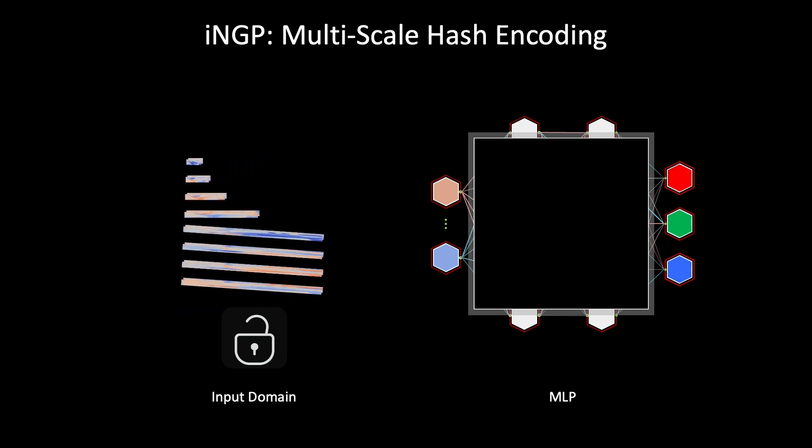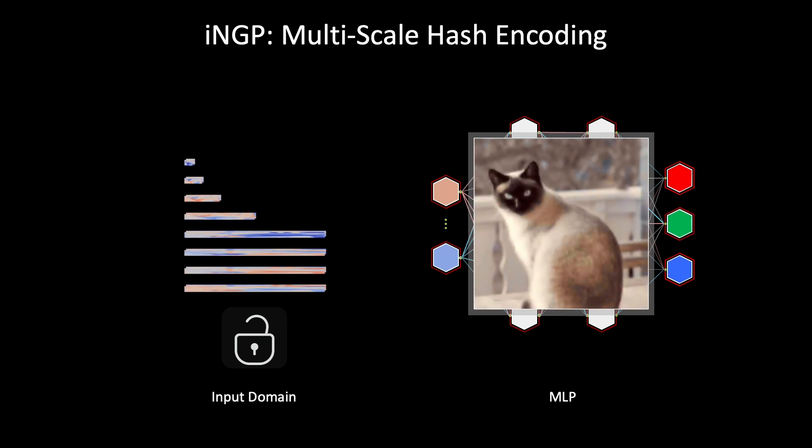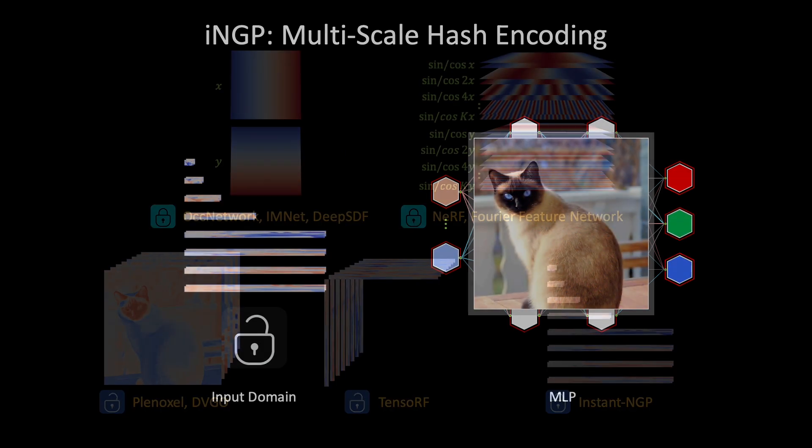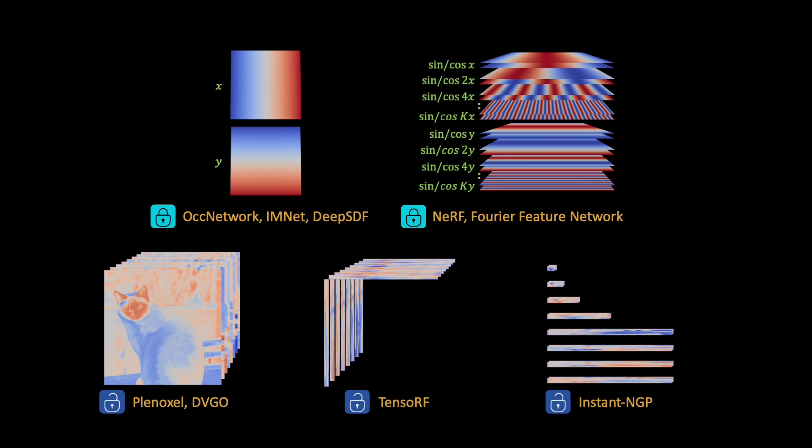Instant NGP exploits a multilevel hash grid to efficiently model internal features of target signals by hashing spatial locations to 1D feature vectors, providing super-fast convergence and robust reconstruction. These representations provide large progress towards efficient signal representation.